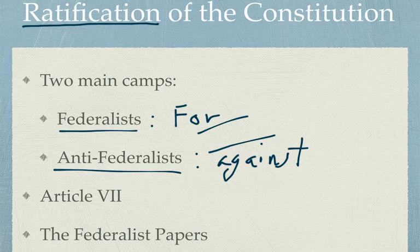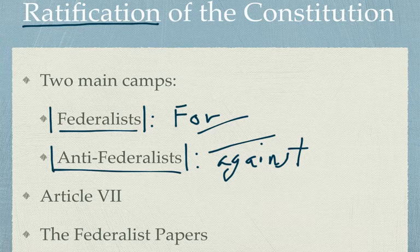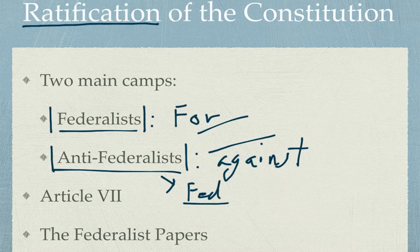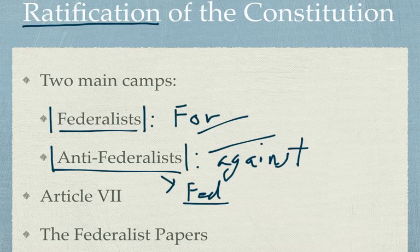Just so you know, these names — Federalists and Anti-Federalists — are interesting because we're actually going to read some of the articles by these groups. They don't actually refer to themselves this way. Federalists call themselves Federalists for sure, but Anti-Federalists call themselves Federalists as well. The name Anti-Federalists comes from the Federalists. As you've always heard, the winners write history, so that's what we get. You're not going to see Anti-Federalists referring to themselves as Anti-Federalists.